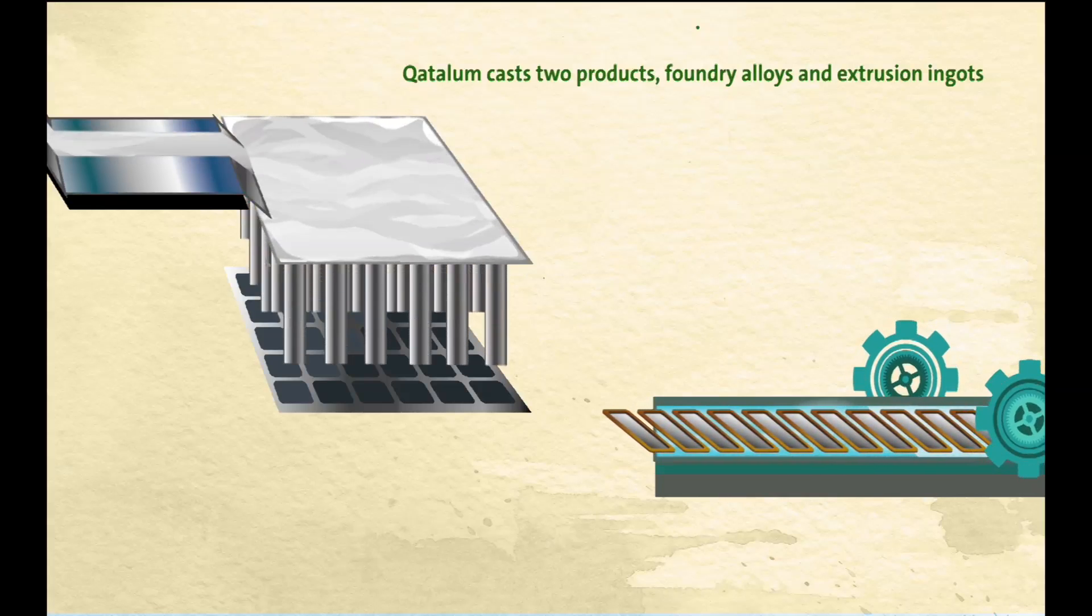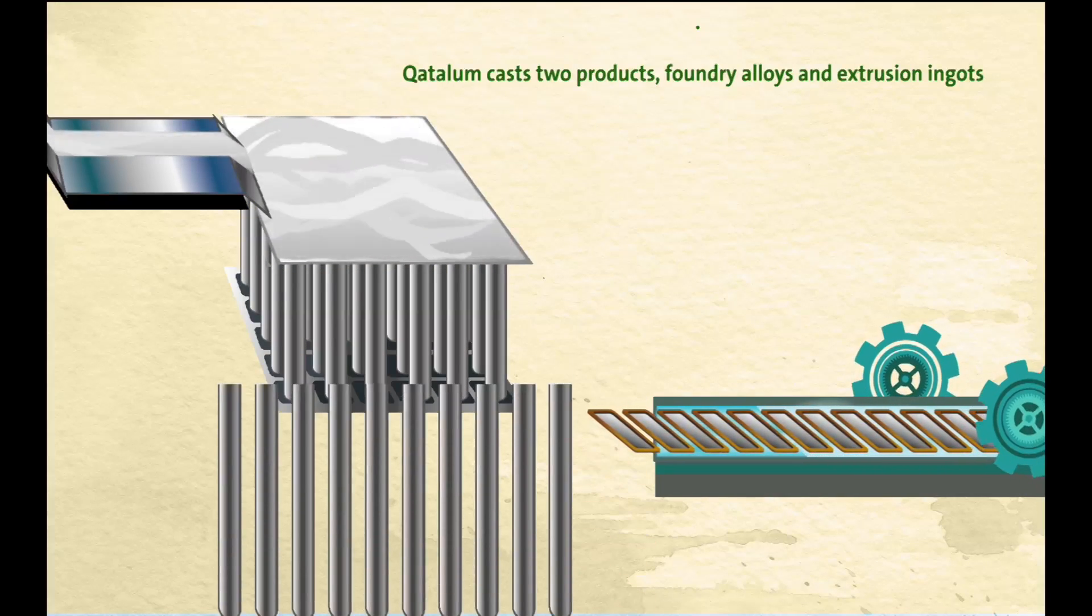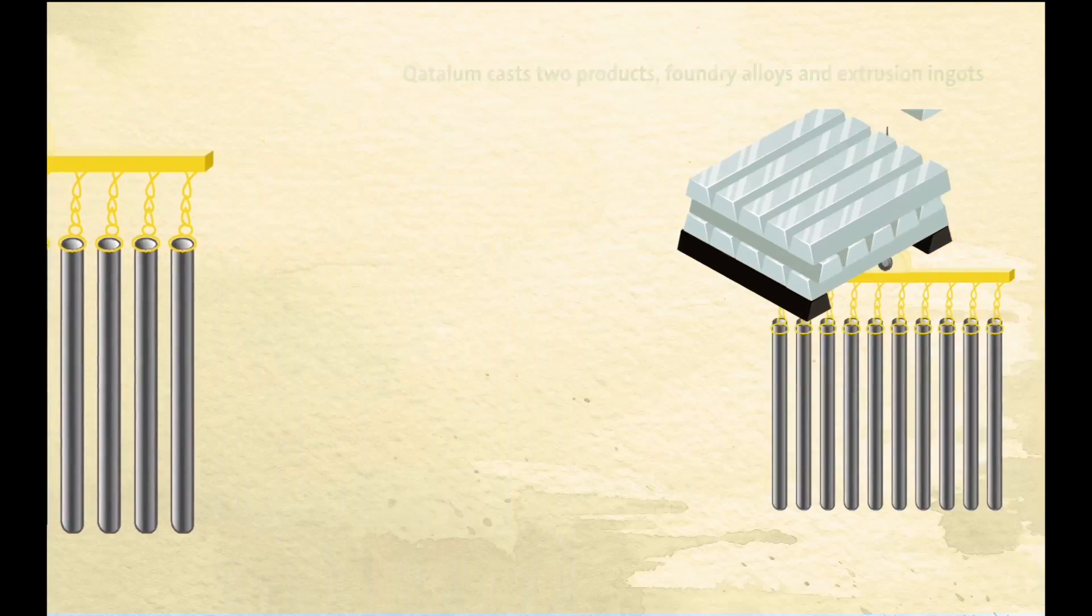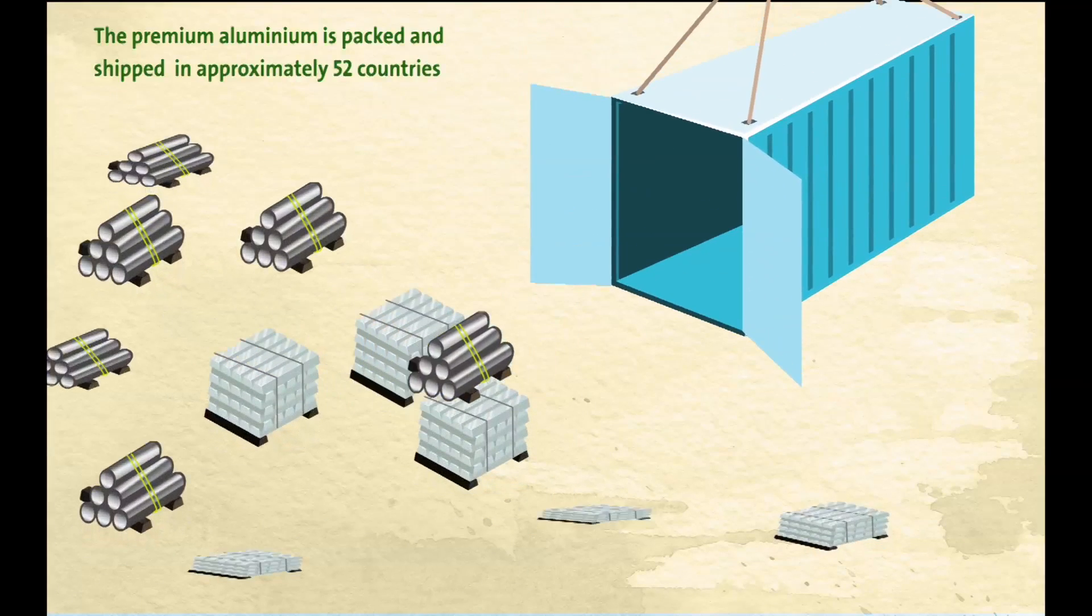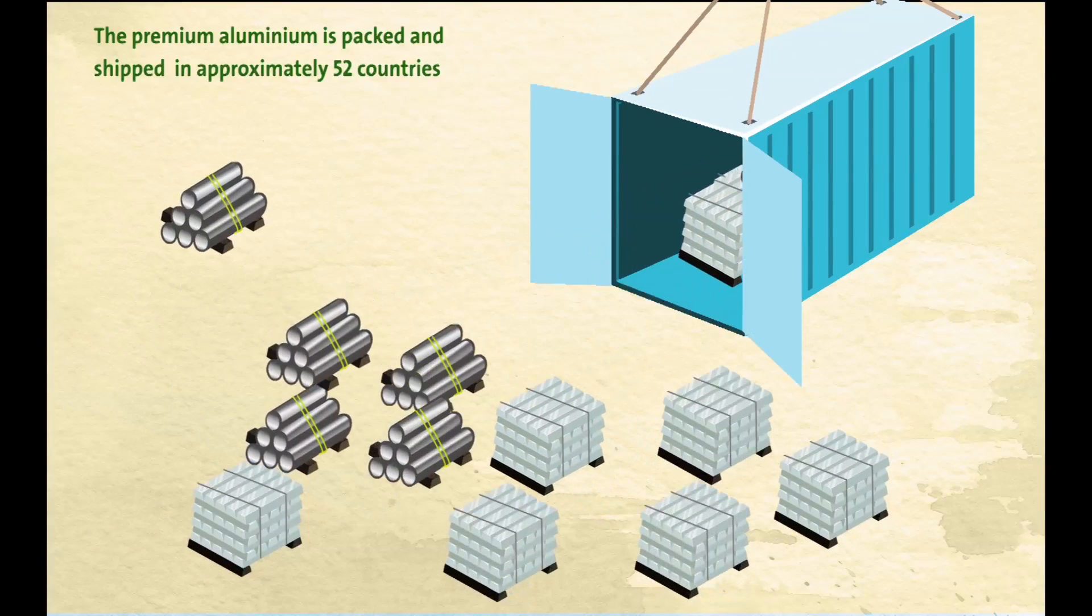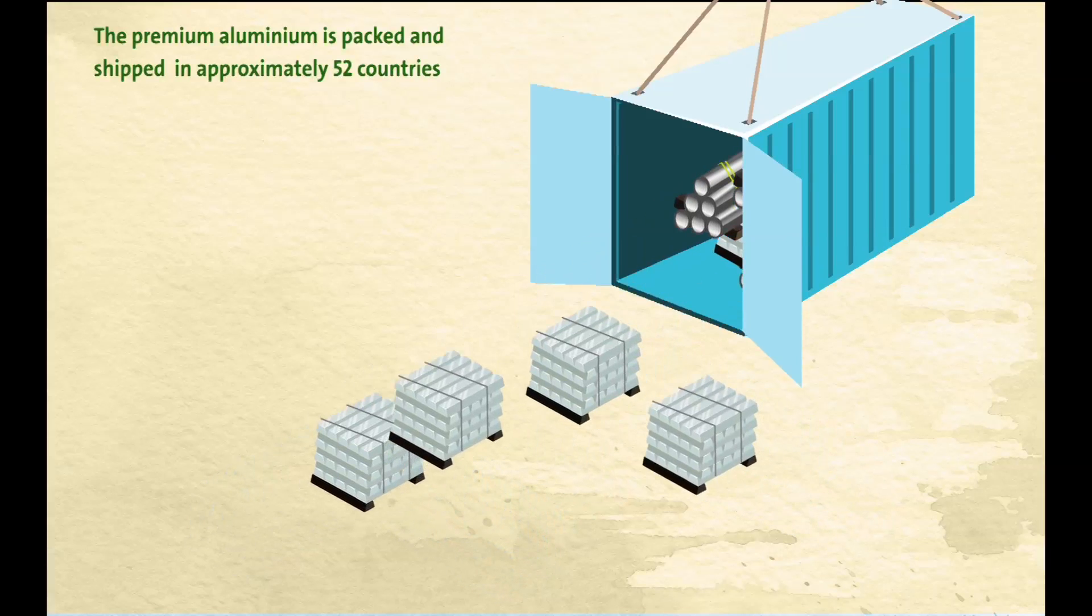Qatalum casts two products, referred to as foundry alloys and extrusion ingots. As part of its fulfillment commitment to customers, the value-added premium aluminium is packed and shipped to clients in approximately 52 countries.